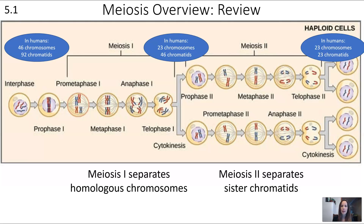After meiosis 1 we have 23 chromosomes and 46 chromatids, because in meiosis 1 there is a separation of homologous chromosomes. At the end, the gametes have 23 chromosomes and 23 chromatids, because in meiosis 2 sister chromatids are separated.